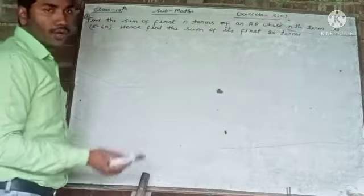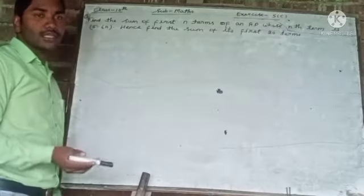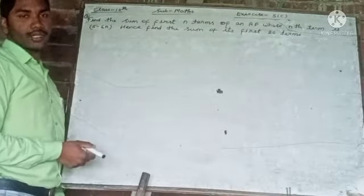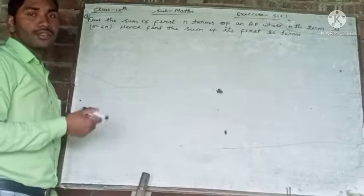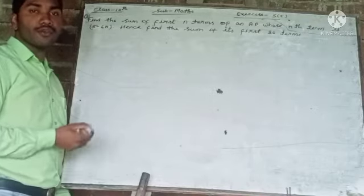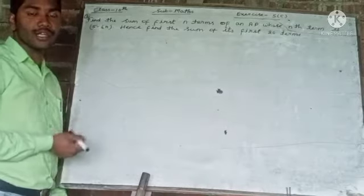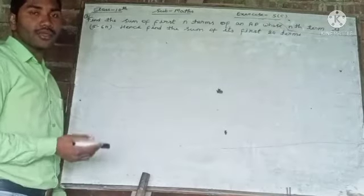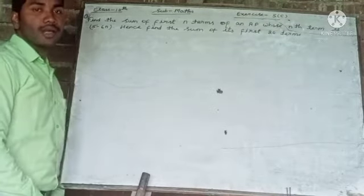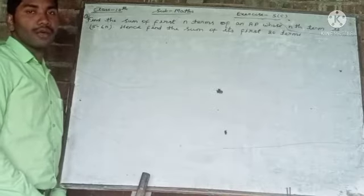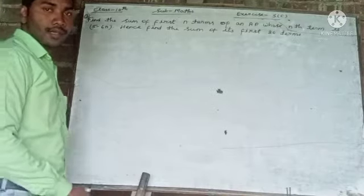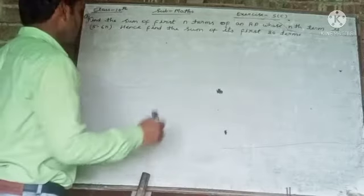Here, the first term, second term, and common difference are not given. The nth term is given, and from the nth term we will find out the first term, second term, and after that the value of d. By finding these values, we will find out the sum of the arithmetic progression. So, let us solve this question.